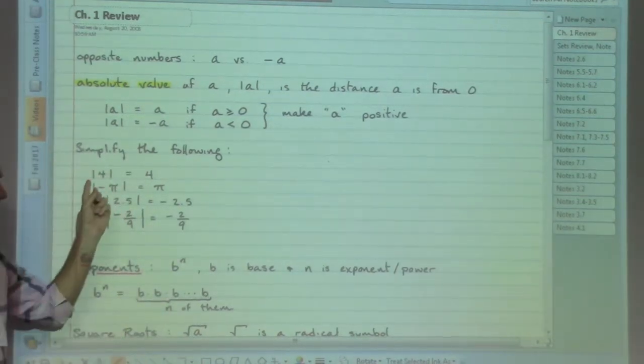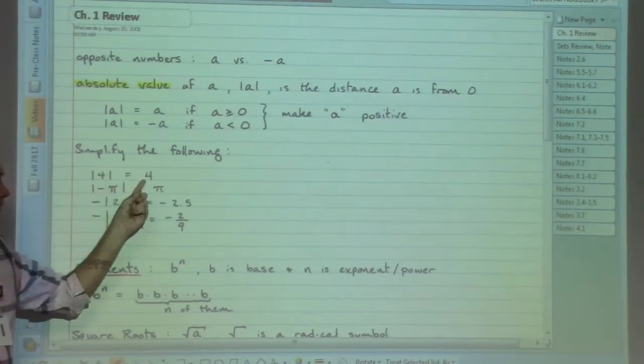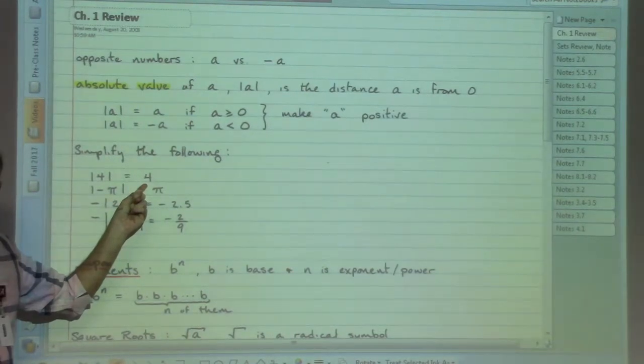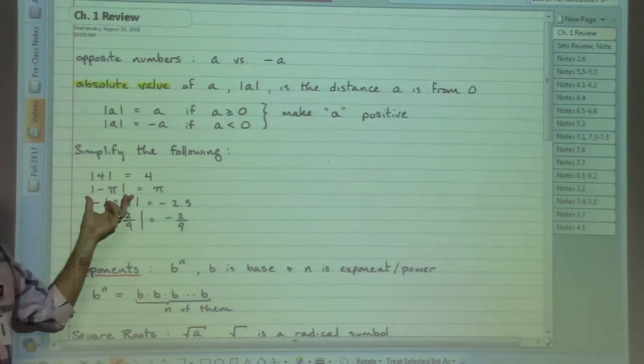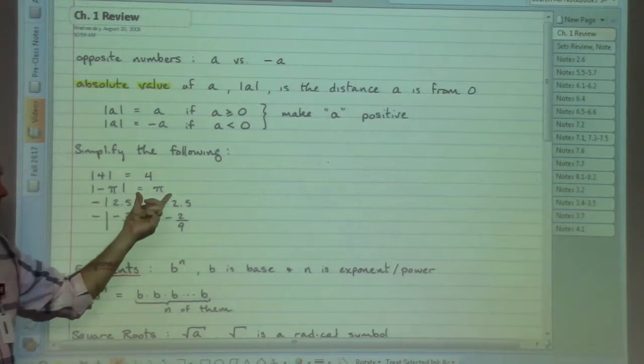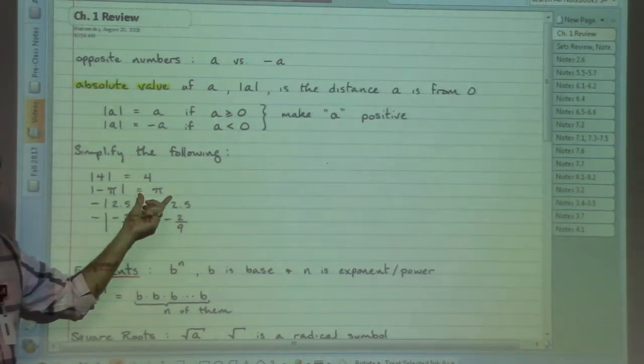So a couple of examples here. The absolute value of four, four is already positive, so when it gets out of math jail, it stays positive. The absolute value of negative pi, when it gets out of math jail, that number will be positive.